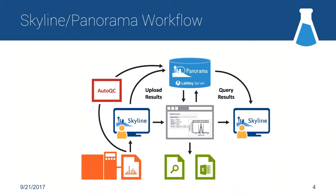There's also AutoQC — a shortcut that makes it possible to automatically pull data directly into Panorama without ever having to interact with it manually in Skyline. For routine things like QC or system suitability, the data can automatically flow all the way into Panorama effectively directly from the mass spec itself, without requiring a human to be involved.